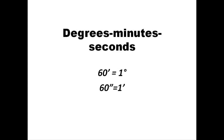Degrees, minutes, and seconds, as their names suggest, relate like the units of time. 60 minutes equals 1 degree, just like 60 minutes equals an hour. And 60 seconds are equal to 1 minute.